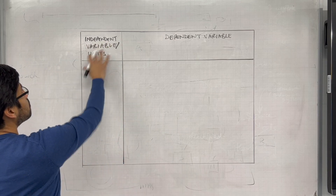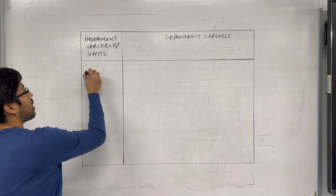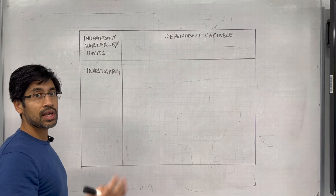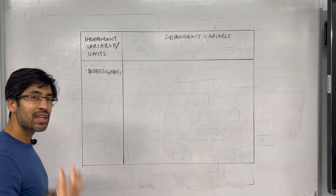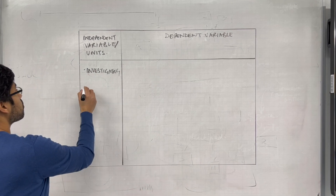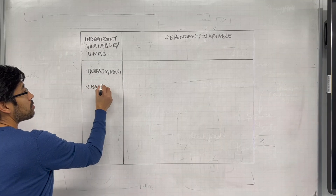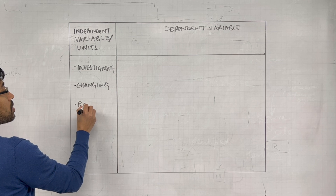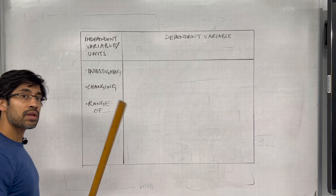So independent variable — how do you know what's your independent variable? Remember, it's the thing that you are changing. It's the factor that you are investigating. It's not always obvious. So how do you identify your independent variable? It'll be the thing that you are investigating, the thing that you're changing intentionally. It might also be something that can be identified as having a range. So these three things usually identify your independent variable.